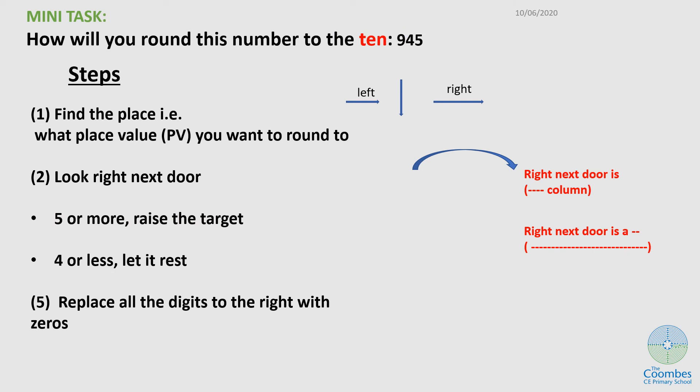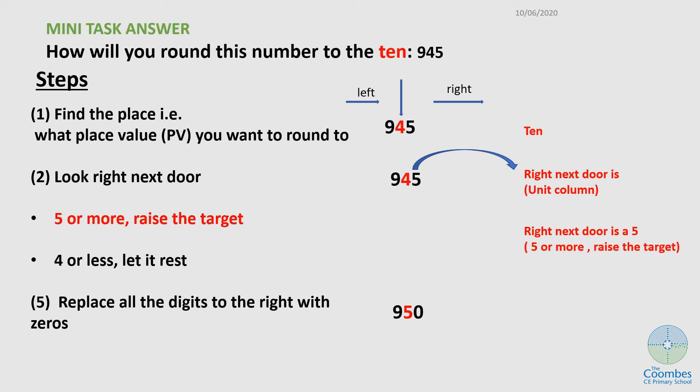What I want you to do is pause the video here and round this number to the nearest ten. We'll look at the answers in the next slide. How did you do? You were asked to round 945 to the nearest ten. If I apply my steps, find the place. The place is ten, so this is unit and the tens column. Look right next door. From my target number, if I look to the right, it's a five. Which of these am I going to apply is definitely five or more, raise the target. Because this is five, I'm going to raise the four by one to make it a five. My rounded number to the nearest ten is 950.